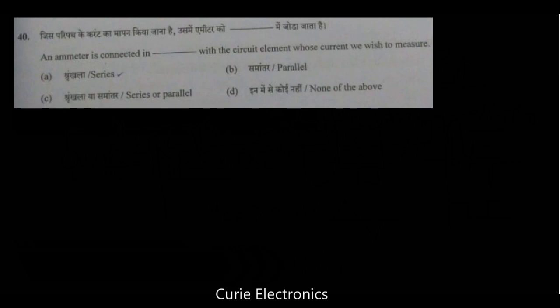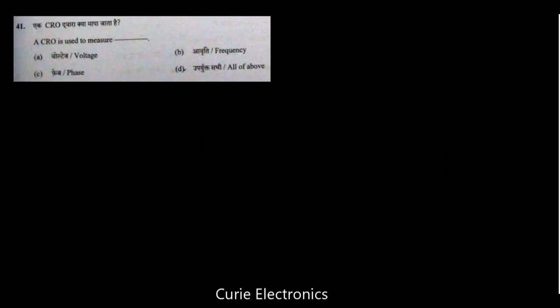Question number 40. An ammeter connected in dash with the circuit element whose current we wish to measure. Ammeter is always connected in series with the circuit to measure the current. Voltmeter is connected always in parallel. CRO is used to measure. What we can measure with CRO? Voltage. AC voltage peak to peak. We can measure. Or peak voltage we can measure. Phase we can measure. Frequency also we can measure. So, the answer is all the above.